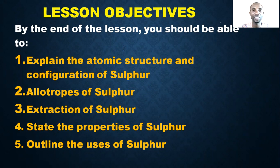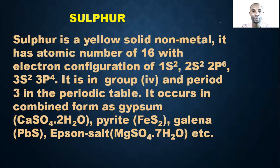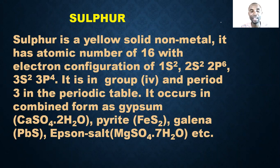First of all, what is sulfur? Sulfur is a yellow solid non-metal, meaning that sulfur is not a metal. It has an atomic number of 16 — it is the 16th element in the periodic table — with electronic configuration beginning 1s², 2s².